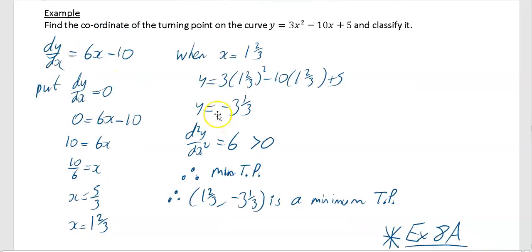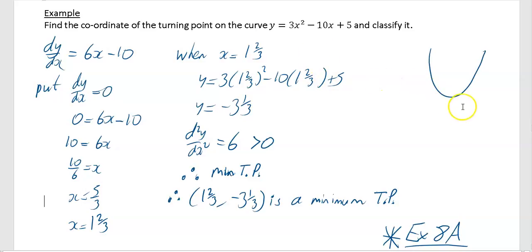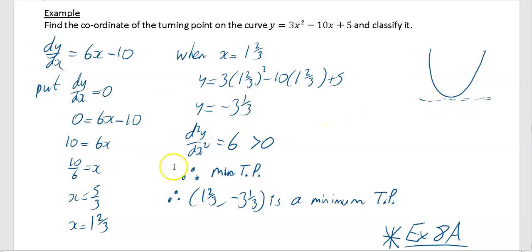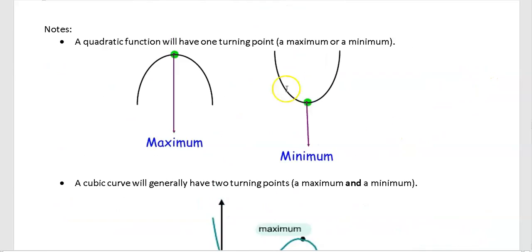This is a positive quadratic, which is a U-shaped graph, so it had to be a minimum turning point. It's not good enough just to state it — you have to show the second derivative working. But it gives you an idea if you're right or wrong: a positive quadratic will only have a minimum, so if you find a maximum you've done something wrong.